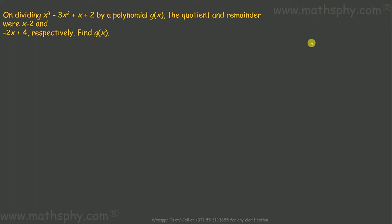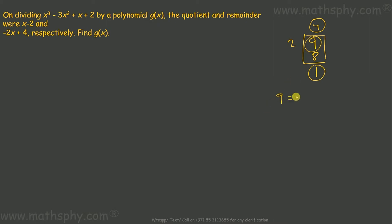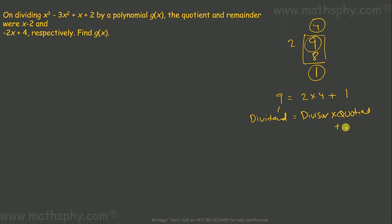For example, we have 9 as dividend and 2 as divisor. It will give me 4 as quotient and 1 as remainder. So can I write 9 as 2 into 4 plus 1? 9 is the dividend, 2 is the divisor, 4 is the quotient, and 1 is the remainder. It means dividend equals divisor into quotient plus remainder.